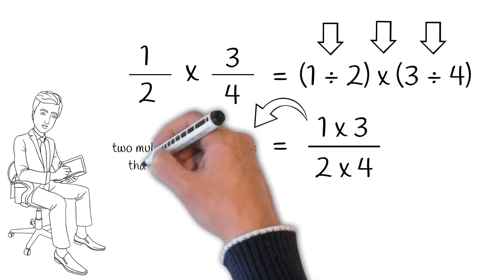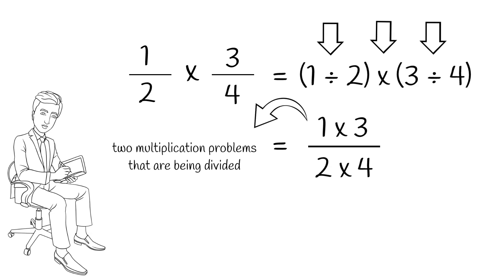Now, it looks like two multiplication problems that are being divided, and it looks just like a fraction. In fact, if we go ahead and do multiplications, 1 times 3 equals 3, and 2 times 4 equals 8. Then we do have a fraction, and it's the answer to our problem.